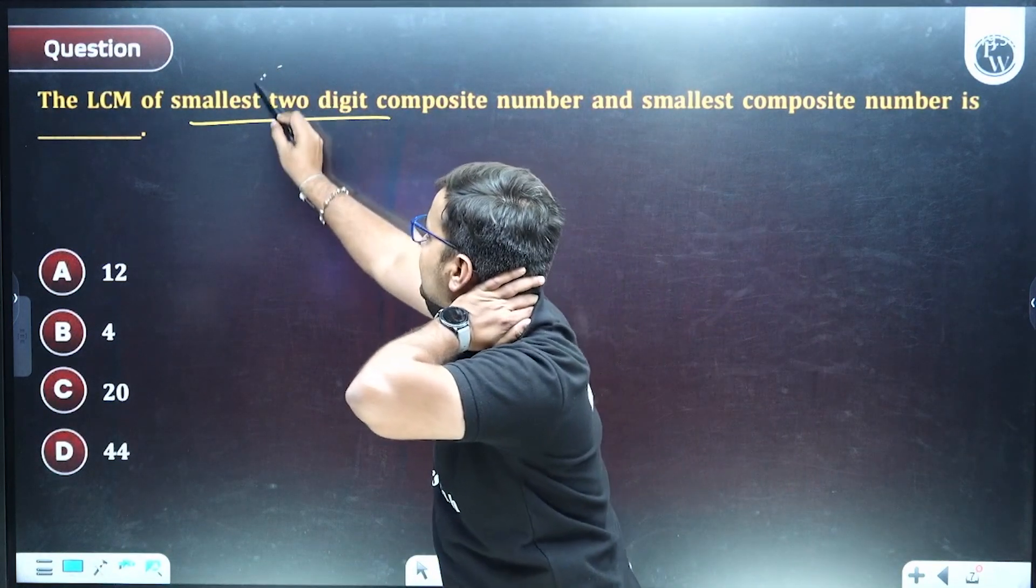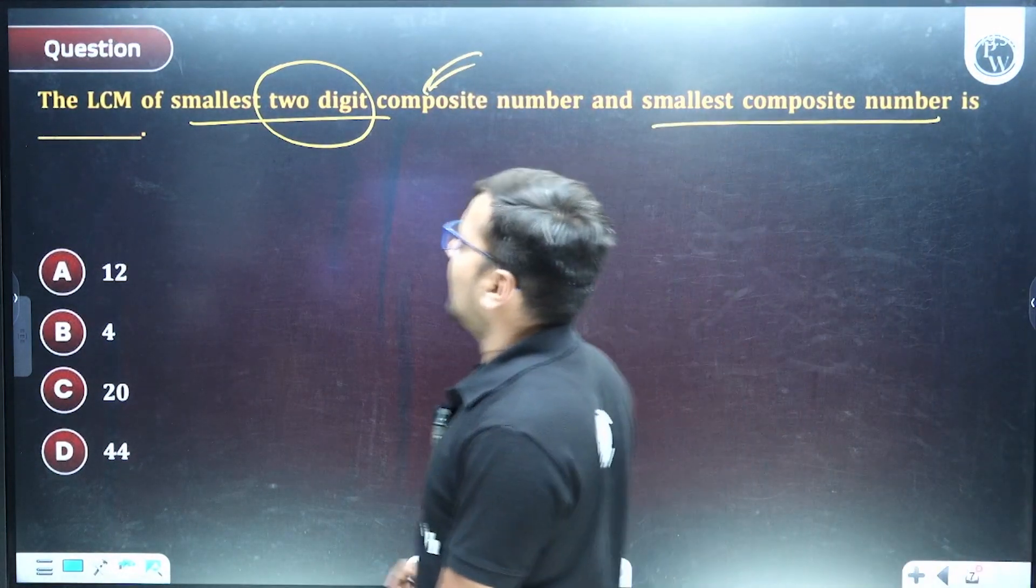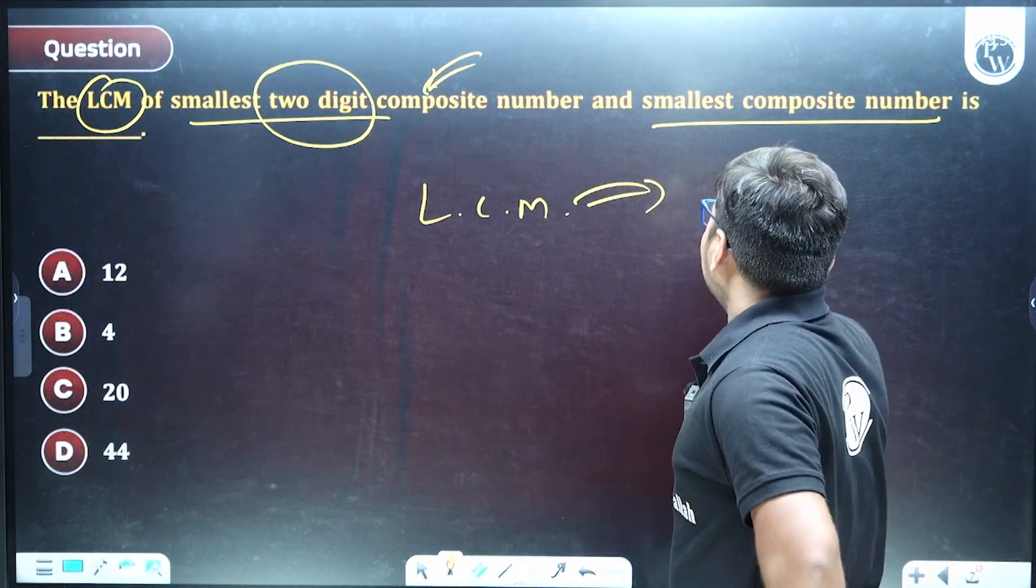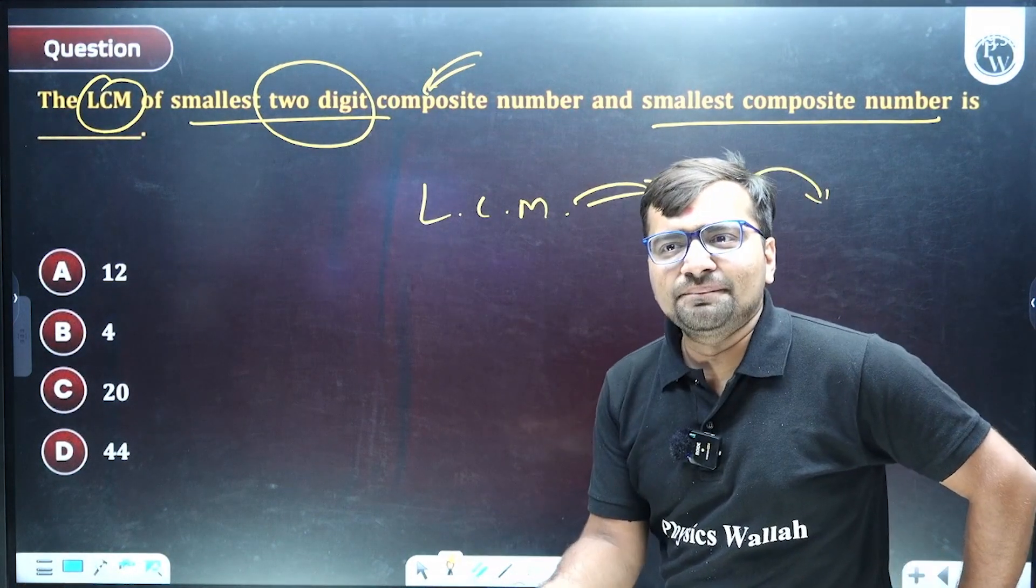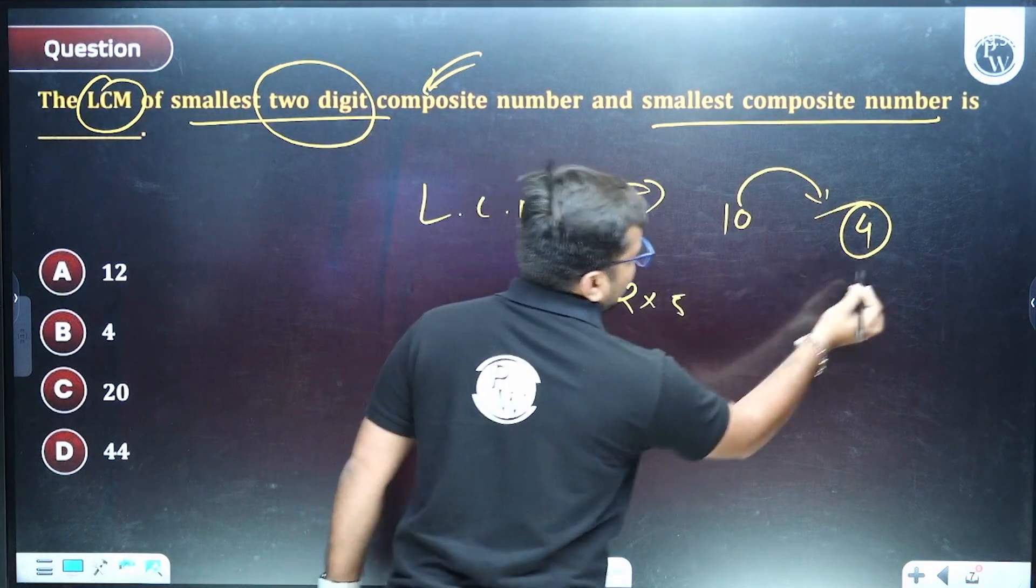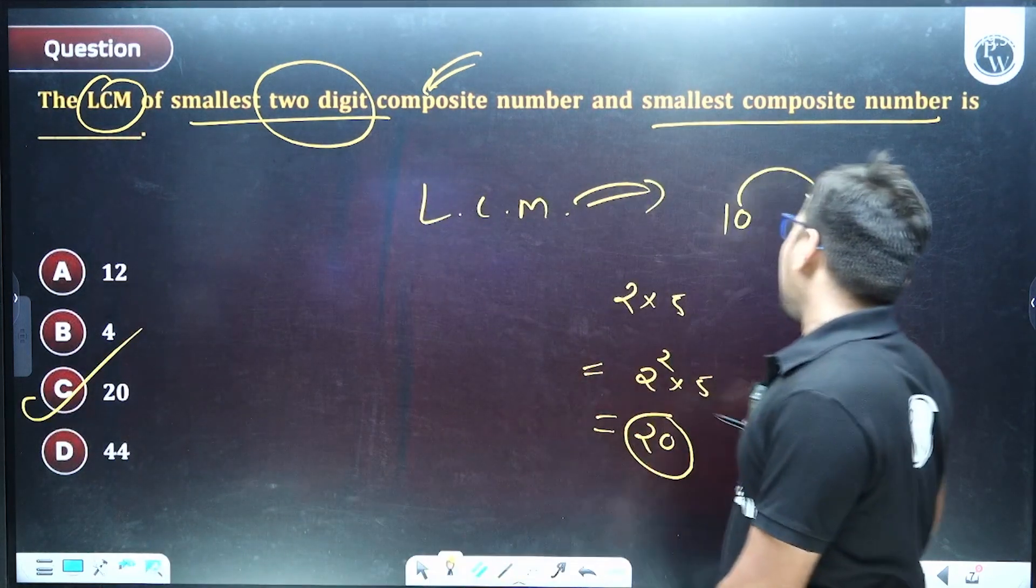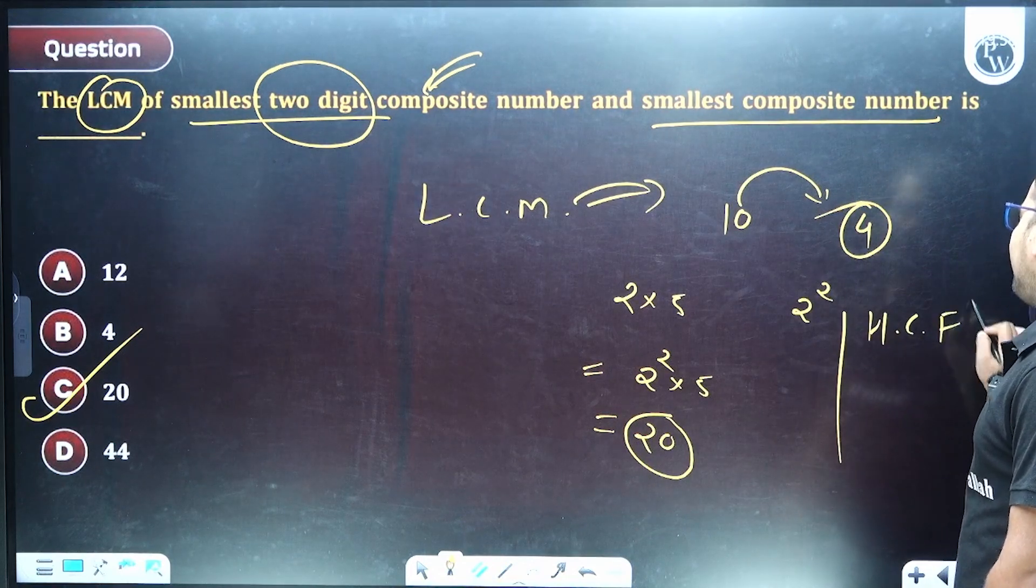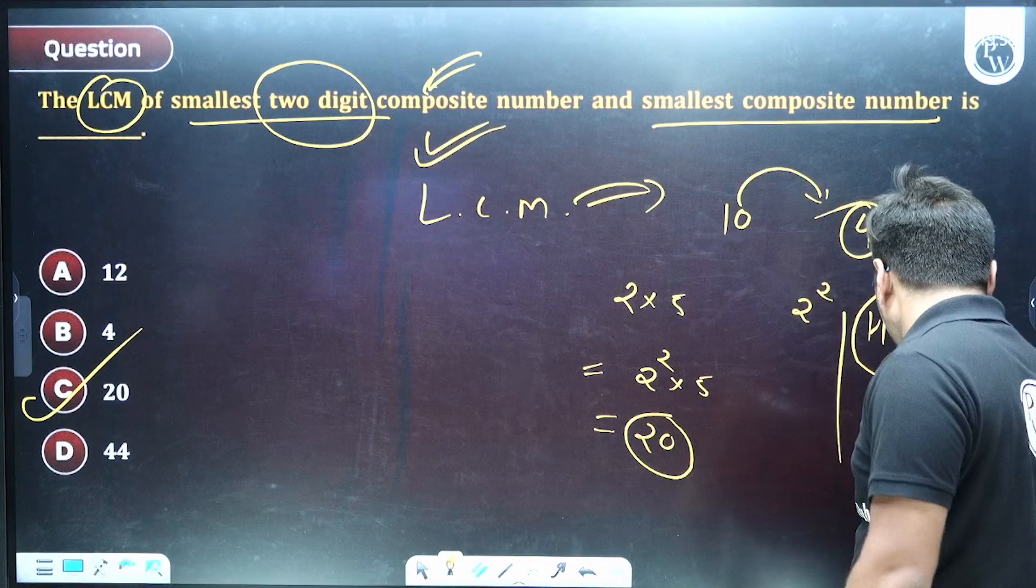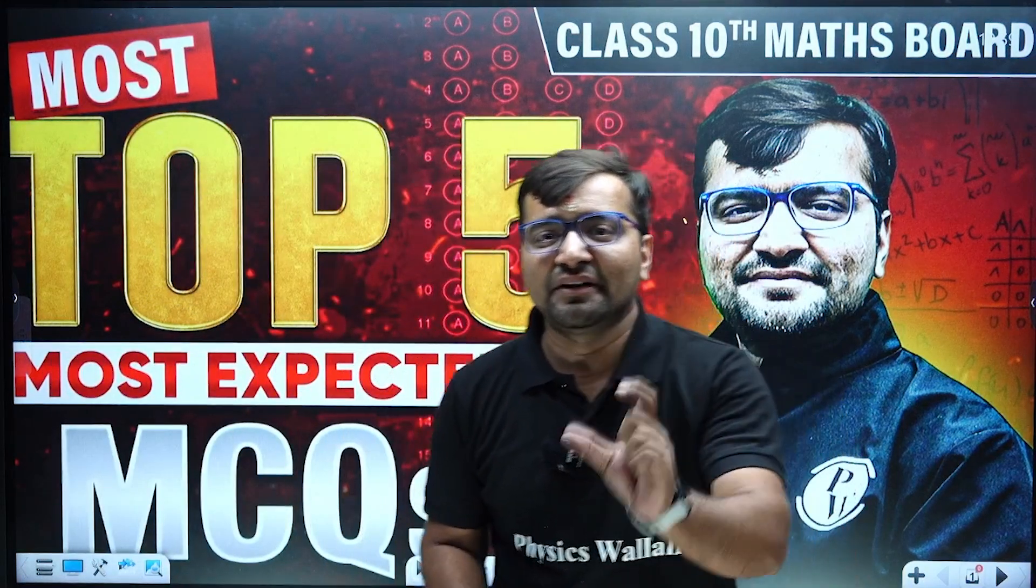Now for the next one: LCM of smallest two-digit composite number and smallest composite number is? Okay, LCM. Smallest two-digit composite number is 10, and what is the smallest composite number? Is it two? No, two is a prime number. It's four only. So now what is the LCM of this? 5 is 5, 2 is 2, and 2². Take a maximum power and each and every factor. So what is your answer? Answer is 20. So option C. Now you have to comment about what is the HCF of the given same question. Write down in the comment section, okay? So now I hope you will get an idea about these top five MCQs most expected for CBSE examination March 2025. Thank you.